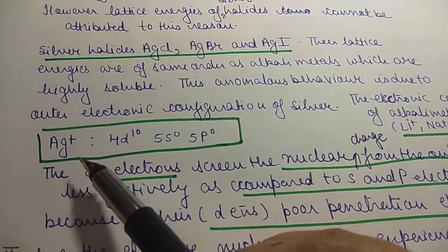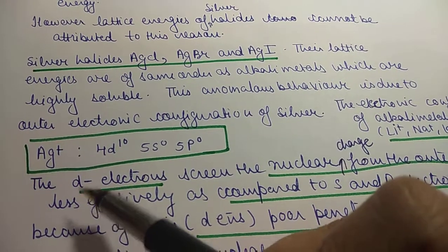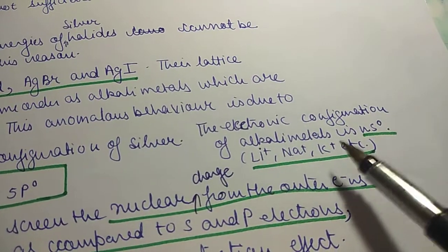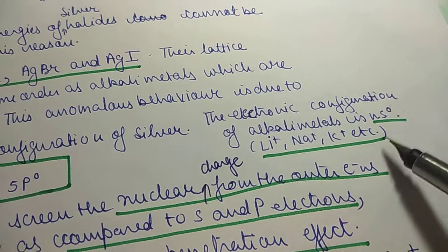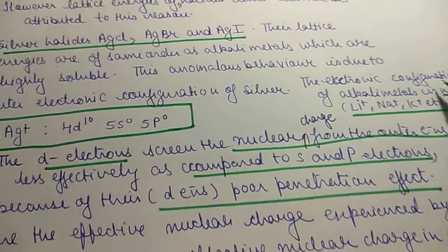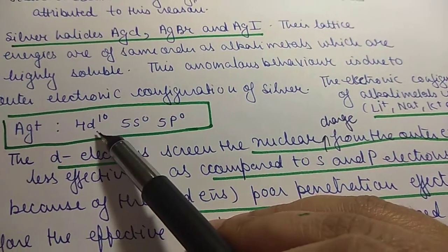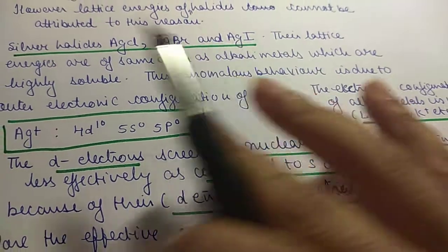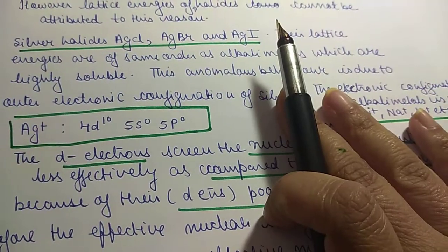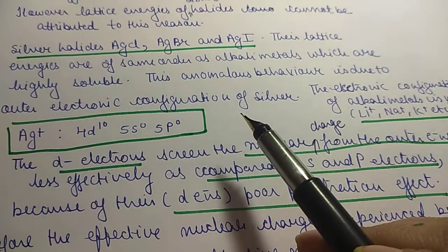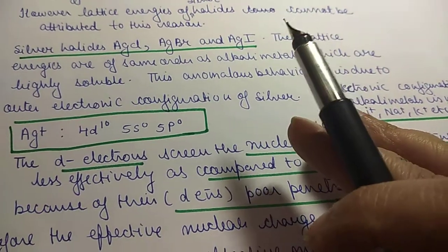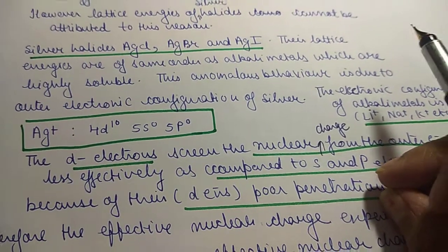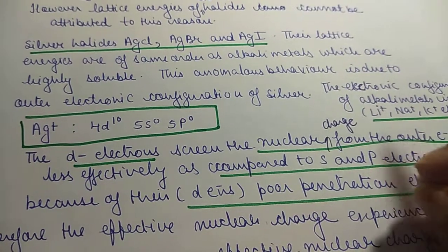The reason is electronic configuration. When Ag+ is formed, its electronic configuration is 4d¹⁰5s⁰5p⁰. In alkali metals, the outermost electronic configuration is ns⁰. In silver, there are d-electrons present, and their screening effect is not good because the d-orbital has poor penetration due to its diffuse shape. So the outermost electrons are not properly shielded and experience a greater effective nuclear charge.